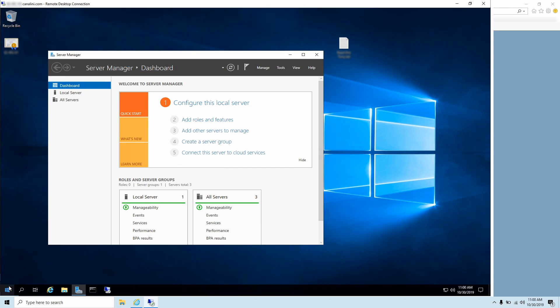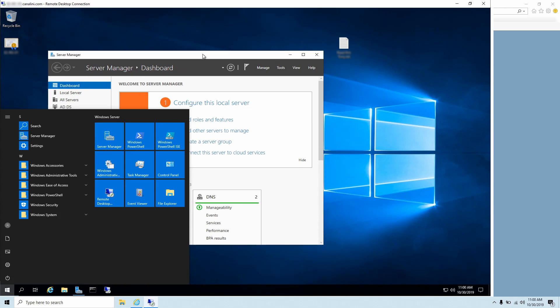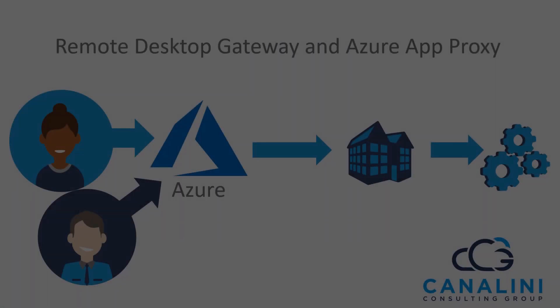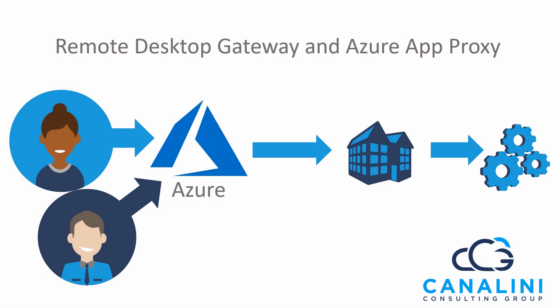Configuring Remote Desktop Gateway in this fashion gives us some advantages from a security perspective that aren't currently in place. The first is that your Remote Desktop Gateway server only needs to communicate with Azure, and there does not need to be any inbound communication directly to your environment from the end user. The second is that by pushing communications through this web page, we can utilize Azure's more robust multi-factor and conditional access settings, controlling which users are allowed to connect and which mechanisms they're allowed to use.